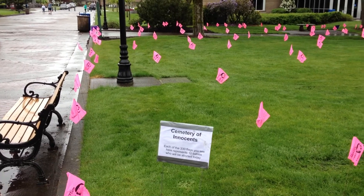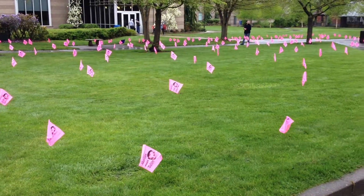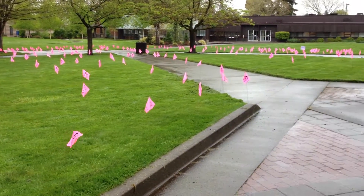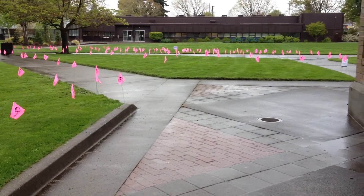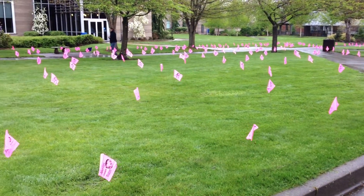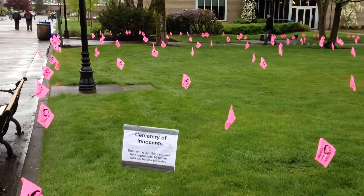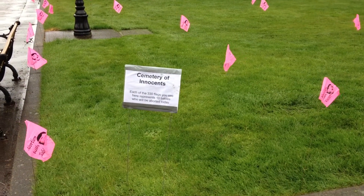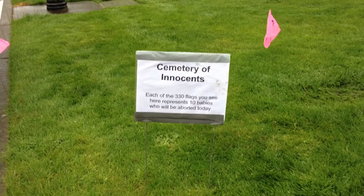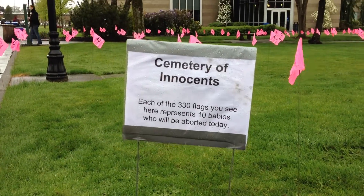Here the students have set up their Cemetery of Innocence. There are 330 flags representing the 3,300 children who will die today. They've spaced them out across one of the major walkways on campus so people can't avoid it. On the corners of the display and along the sides they've put a sign so that people know what the flags represent, so even if they don't get over to talk, they understand what the flags represent.